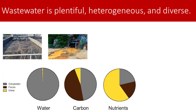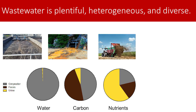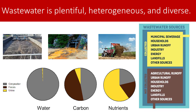Lastly, wastewater is diverse. We think about municipal wastewater, but wastewater as a category includes things like acid mine drainage and agricultural wastewater. These are some of the other things we're talking about when we talk about wastewater — whether that's from energy production, urban runoff, stormwater, or agricultural runoff.